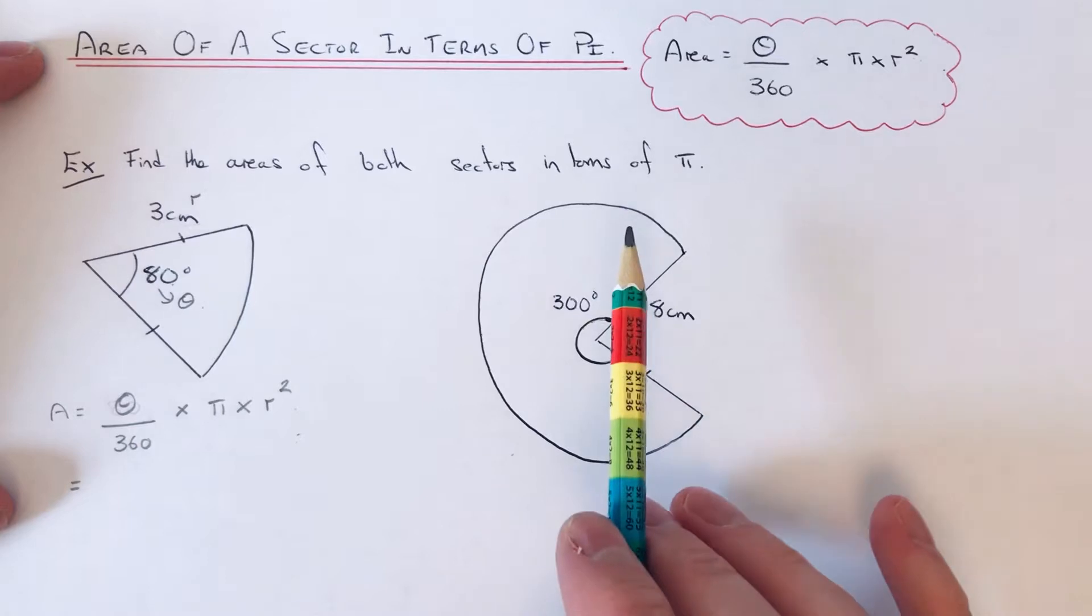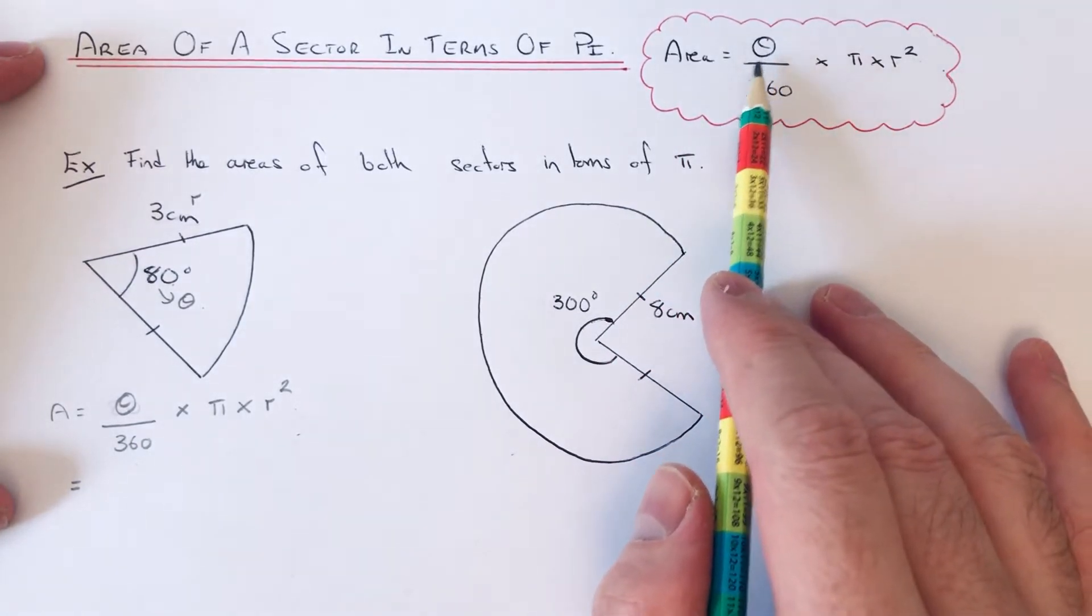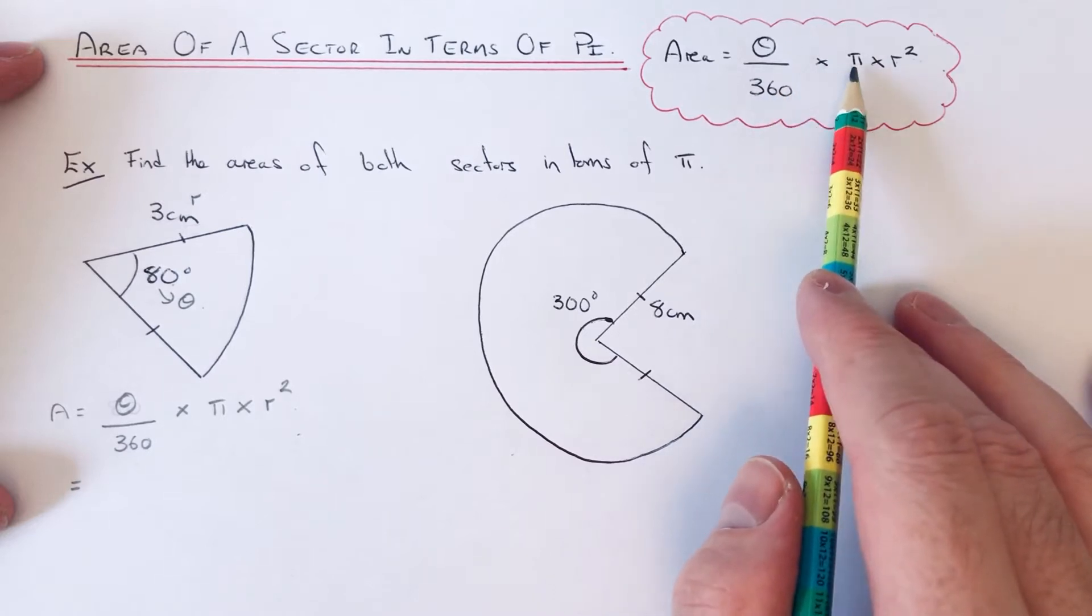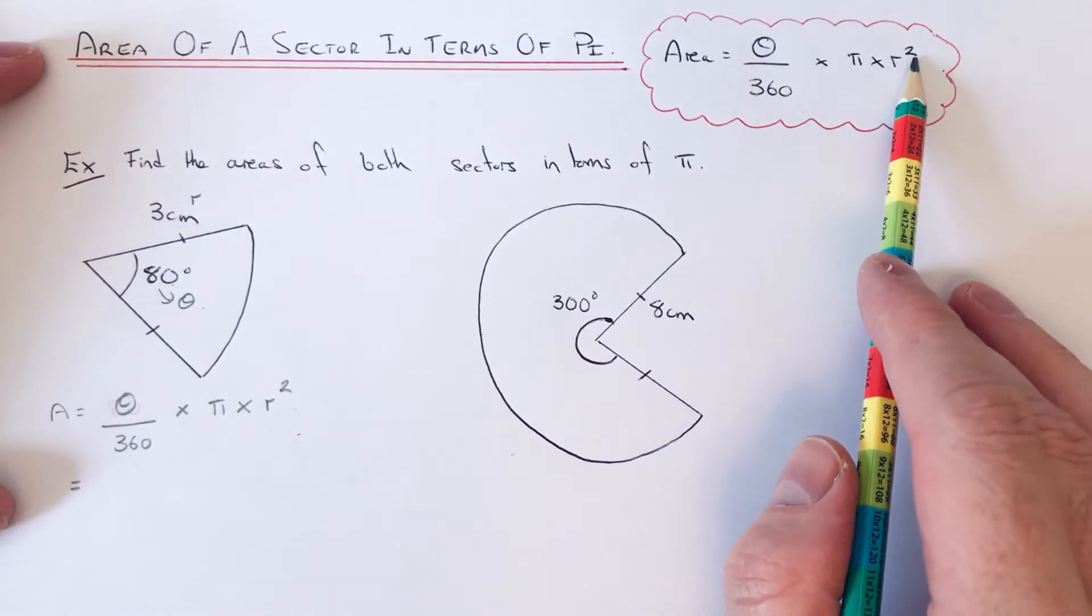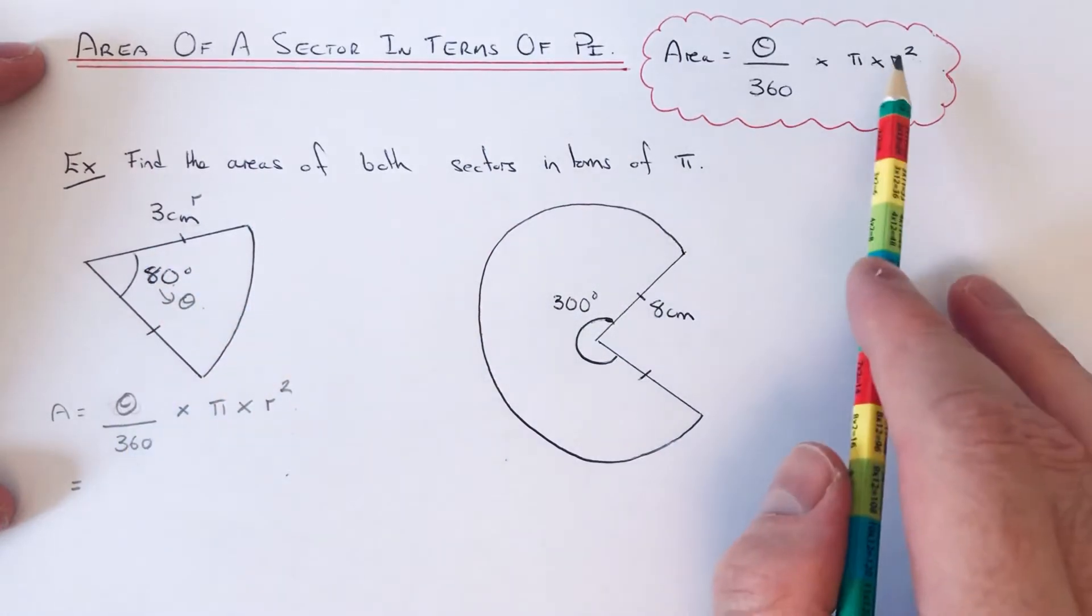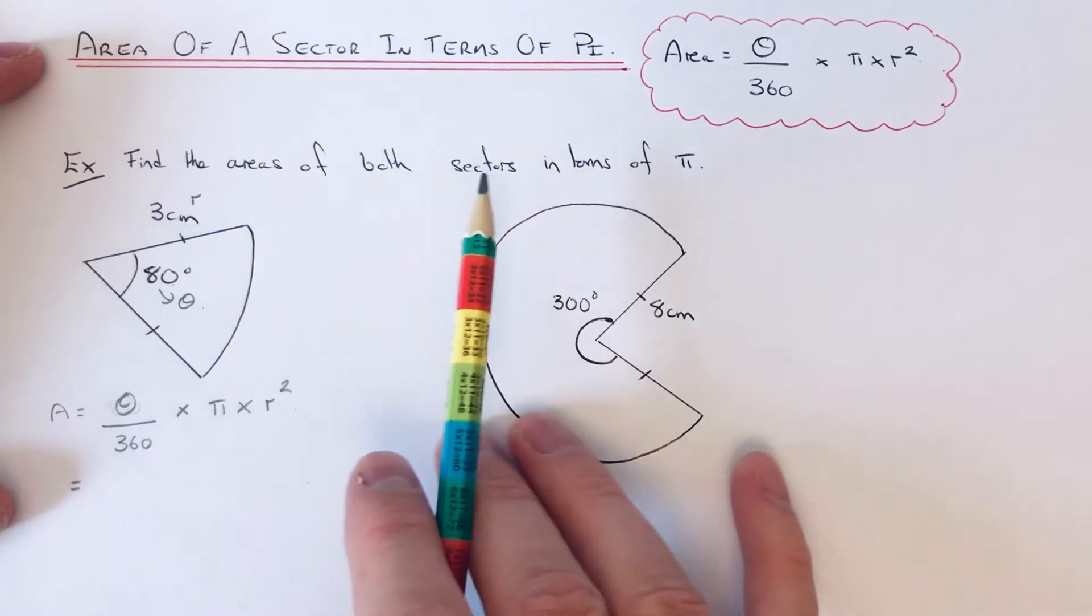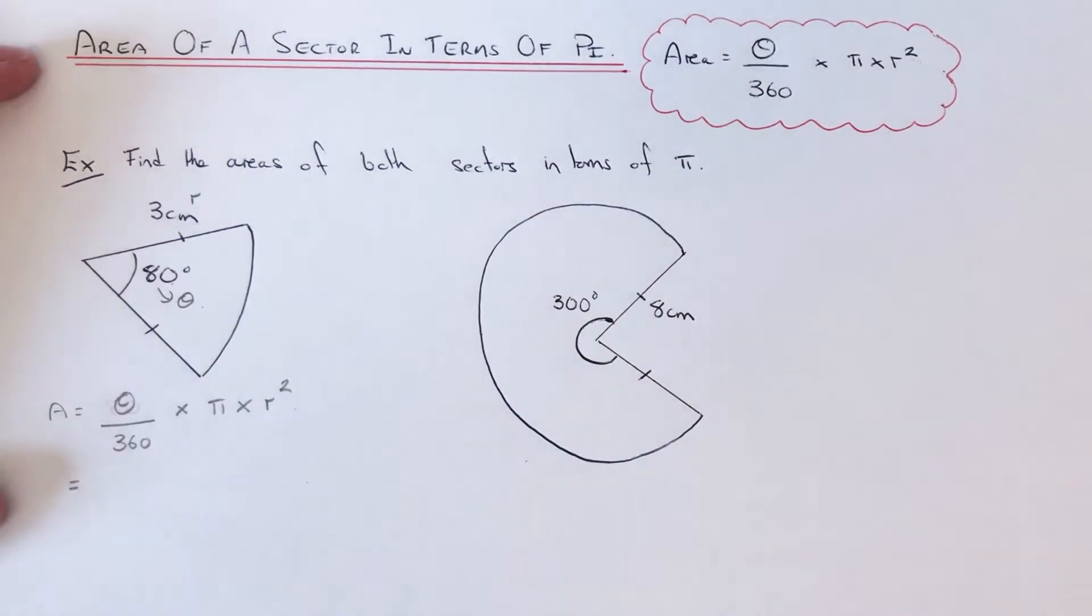To do this, you need to know the formula for the area of a sector. It's theta over 360 times pi times r squared, where theta is the angle inside the sector, and r is the radius of the sector. We'll be doing this without a calculator today.